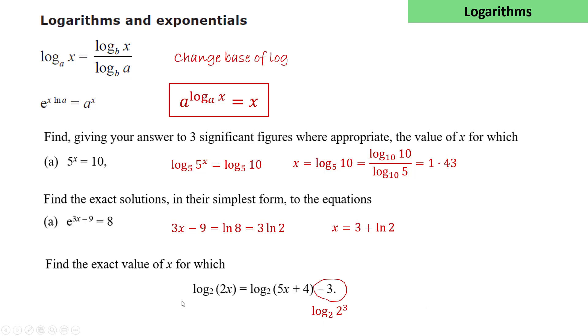So here on the left-hand side, we have log₂(2x). Here we're subtracting logs, so this becomes log₂((5x+4)/8). And this gives us that 2x = (5x+4)/8, which we can rearrange to get x = 4/11.